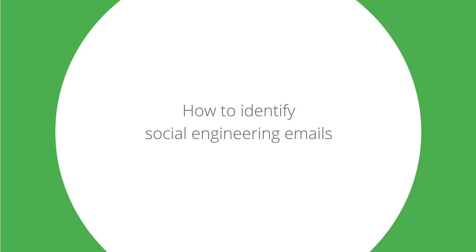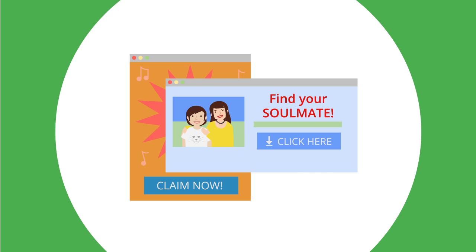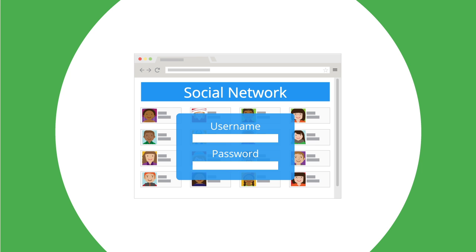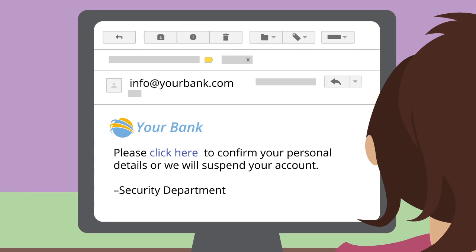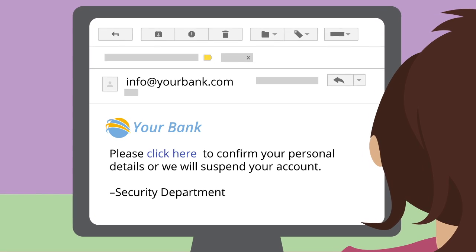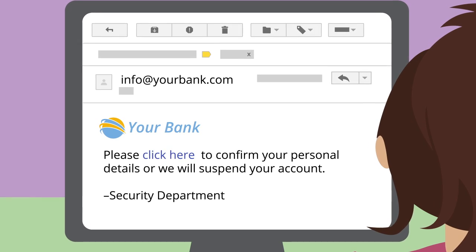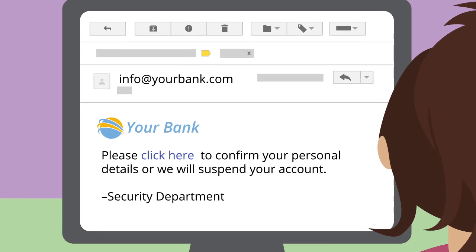How to identify social engineering emails. Social engineering attacks typically happen through email, ads, or on websites that look similar to sites you already use. Social engineering emails look like they're from a legitimate source, such as your bank or Google, but they're not.